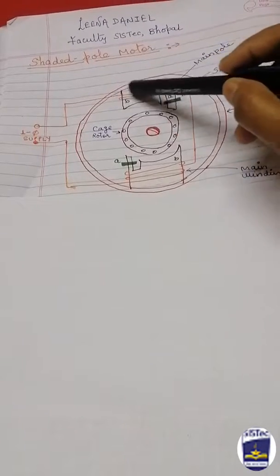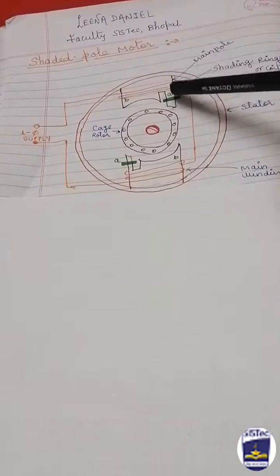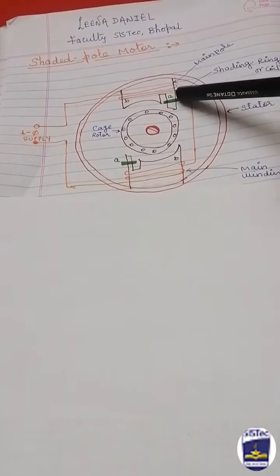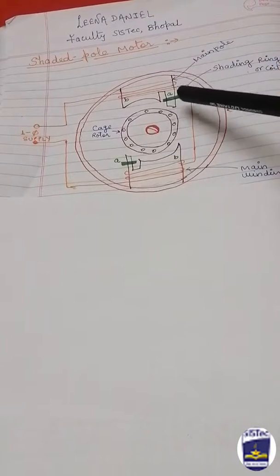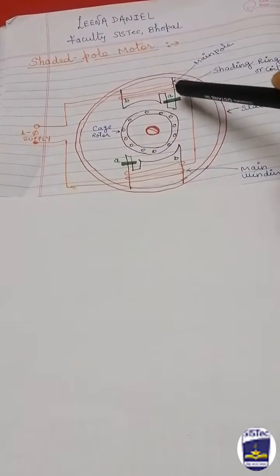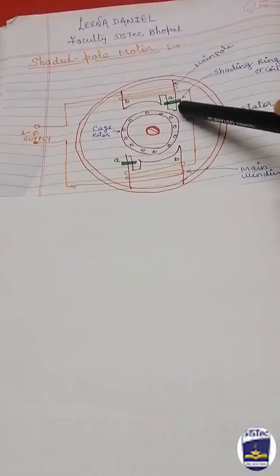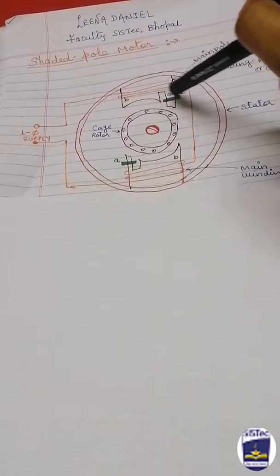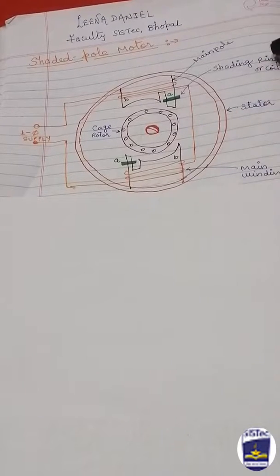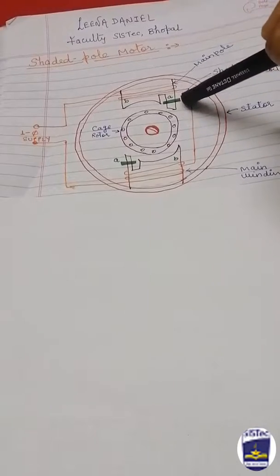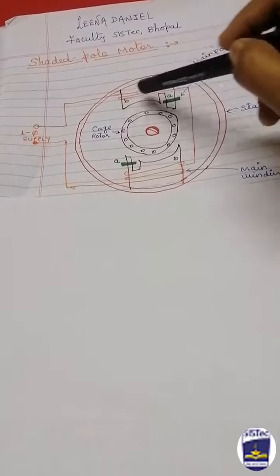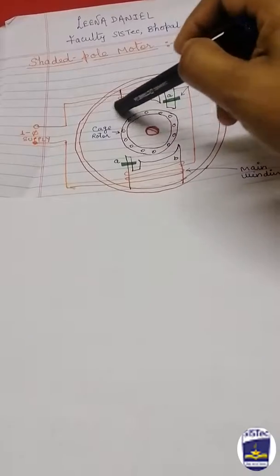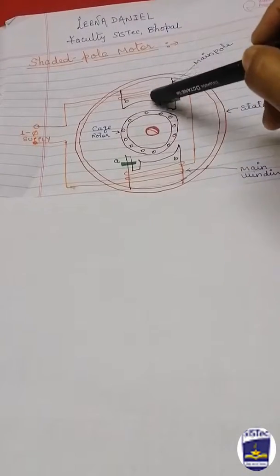This part A is known as the shaded pole. We have shaded this pole by this shading ring or copper ring, so this portion is known as shaded pole. The other portion, the large portion, is known as the unshaded pole.